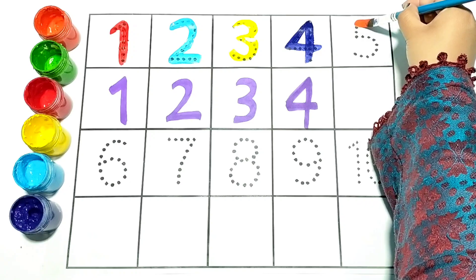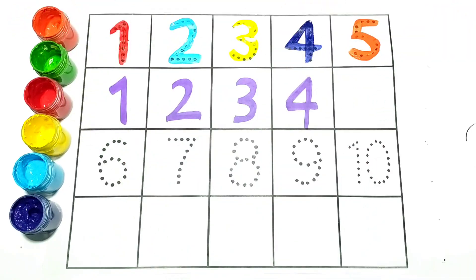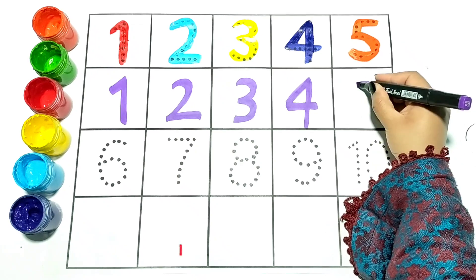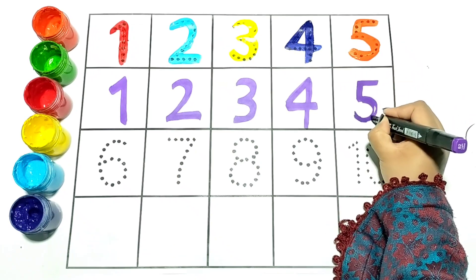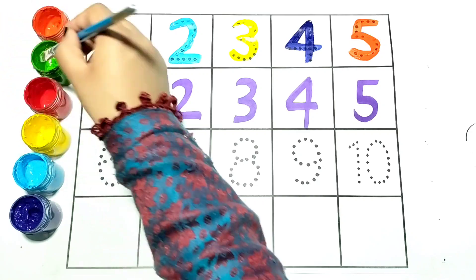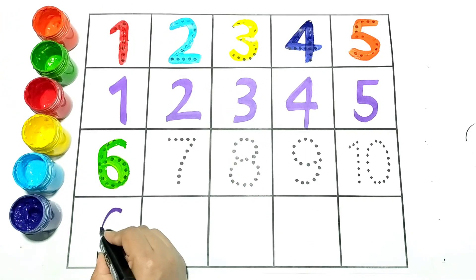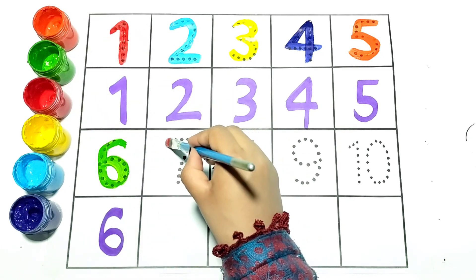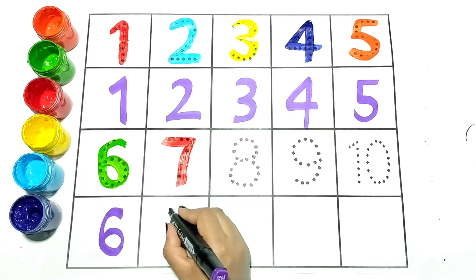Orange, five. I am writing five. Green. Now I am writing six. Red, seven.